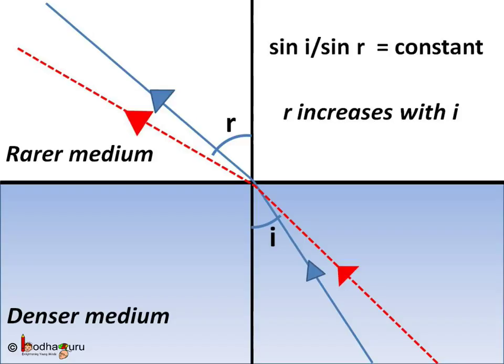Say we increase the angle of incidence i as illustrated by the ray marked in red color. Now the angle of refracted ray r of this red ray will be more than the angle of refraction of the blue ray. So when i increases r will also increase, so that sin i by sin r is equal to constant.